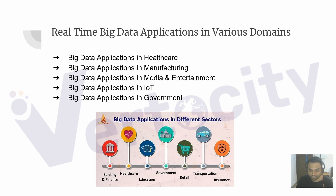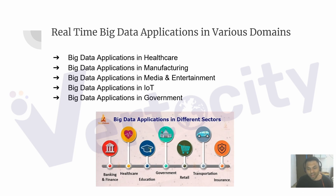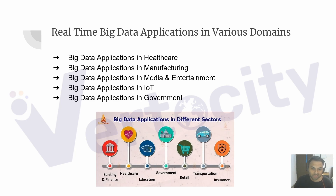To summarize: big data refers to a large amount of data that cannot be processed and stored by a single system. The sources of big data fall into three main categories — people, machines, and organizations. Examples include customer ratings and social media posts for people-generated data; data from healthcare instruments or car sensors and cell phones for machine-generated data; and HR data, churn rates, and employee engagement for organizational data.